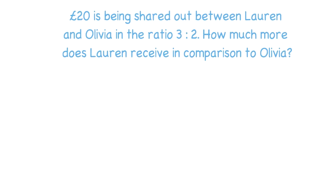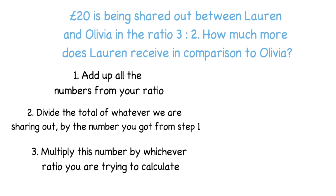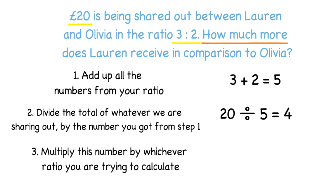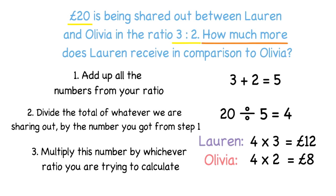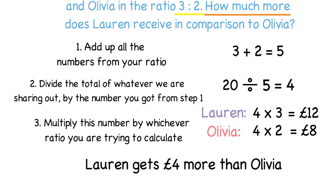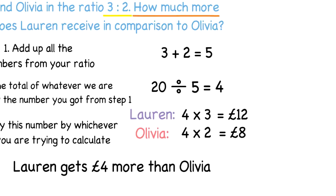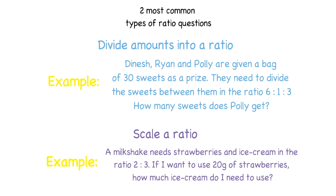Pause the video and see if you can figure out the answer to this question. We start off exactly the same — add up the numbers from the ratio, which gives us five. Then divide 20 by five to get four. To find how much more Lauren receives than Olivia, find what each gets: four times Lauren's ratio of three gives 12 pounds, and four times Olivia's ratio of two gives eight pounds. The difference is four pounds more for Lauren.